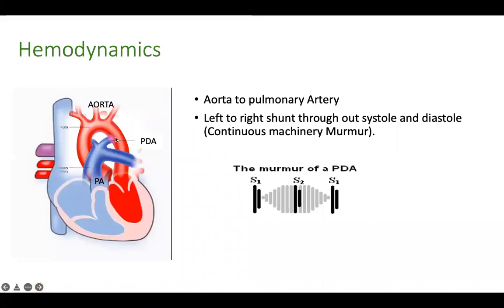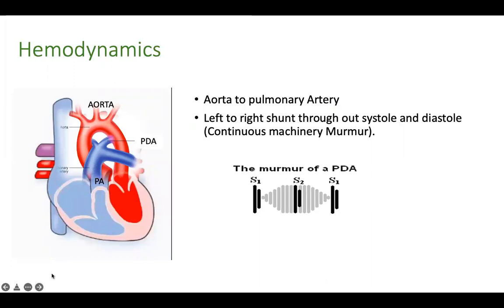This connection between the aorta and the pulmonary artery causes a left-to-right shunt throughout systole and diastole, because the aorta is supplying the systemic circulation and is always under a higher blood pressure than the pulmonary artery. Because the shunt is happening from the aorta to the pulmonary artery, it is always an acyanotic heart disease.